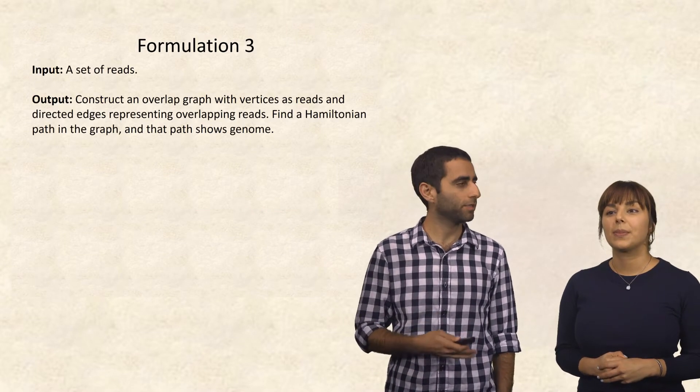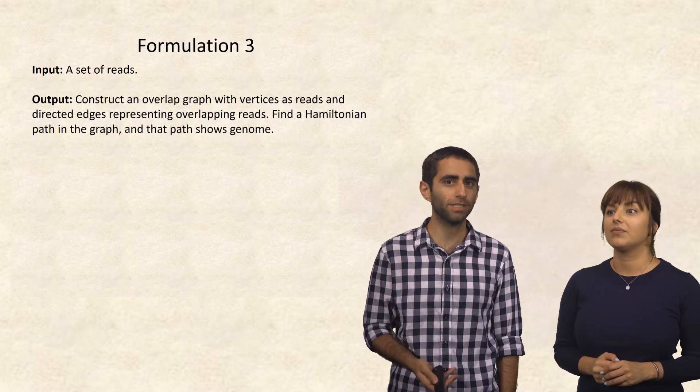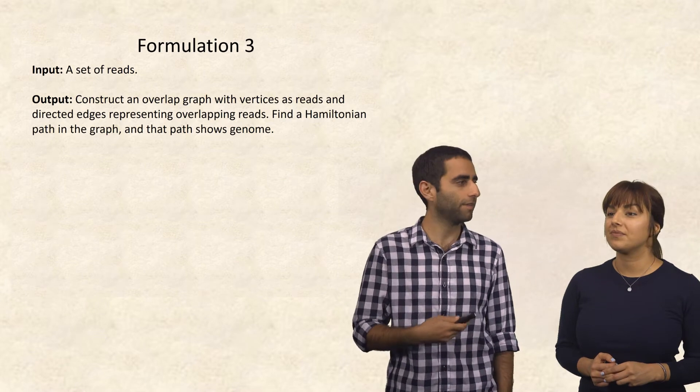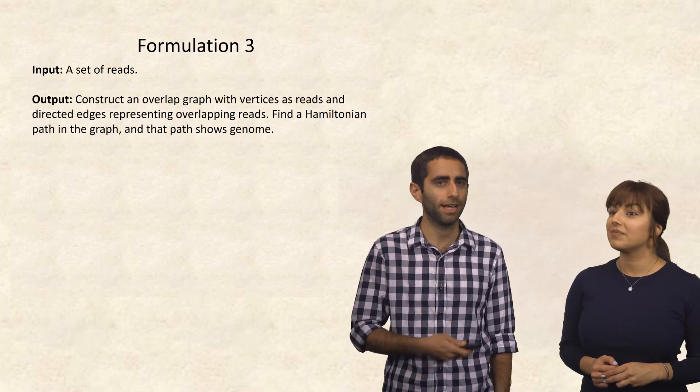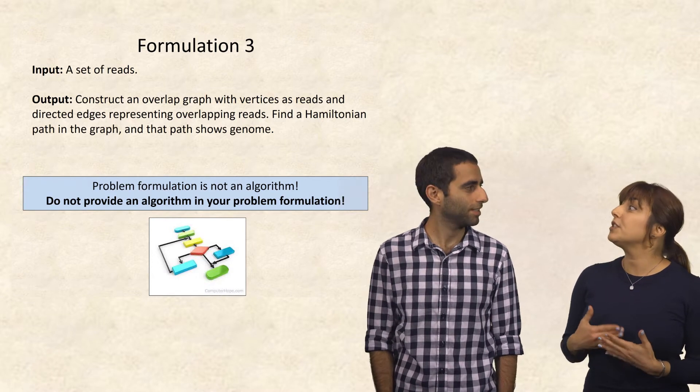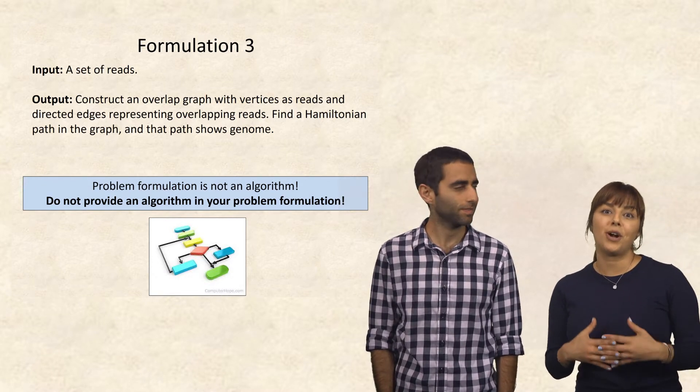Okay, so what about if the input was a set of reads, and the output was to construct an overlap graph with vertices as reads, and directed edges representing overlapping reads? Then we could find a Hamiltonian path in this graph, and that path would show us the genome. Problem formulation is not supposed to include the algorithm. Do not provide an algorithm in your problem formulation.